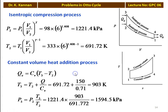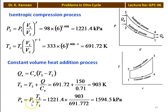For constant volume heat addition: Qs equals Cv × (T3 - T2), so T3 equals T2 + Q/Cv equals 691.72 + 150/0.71 equals 903 Kelvin. Pressure P3 equals P2 × T3/T2 equals 1221.4 × 903/691.72 equals 1594.5 kPa.